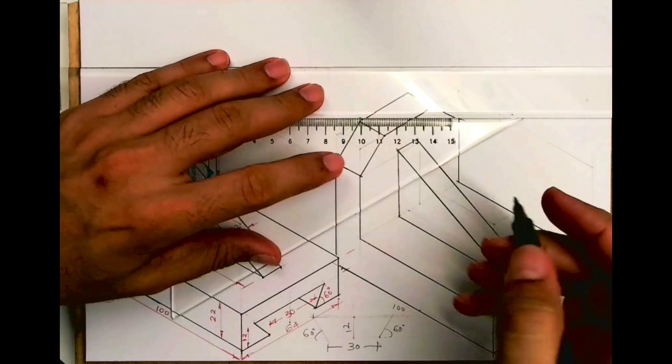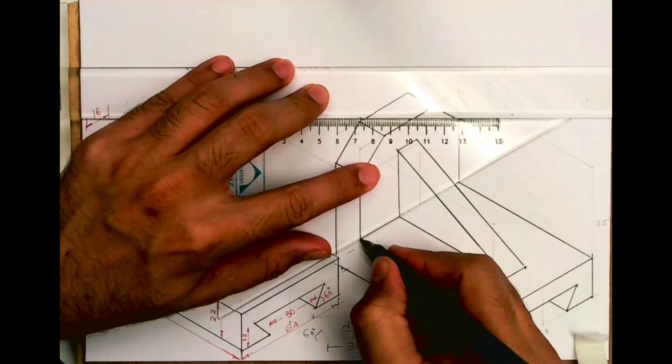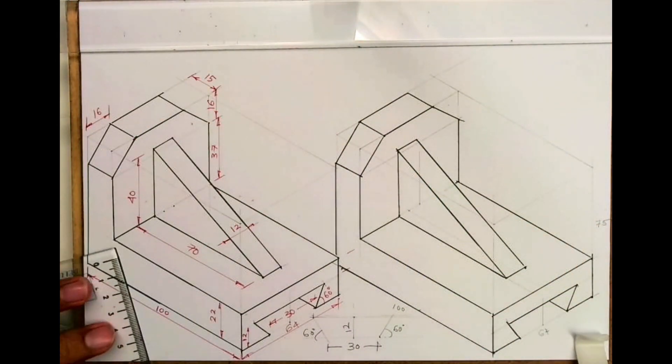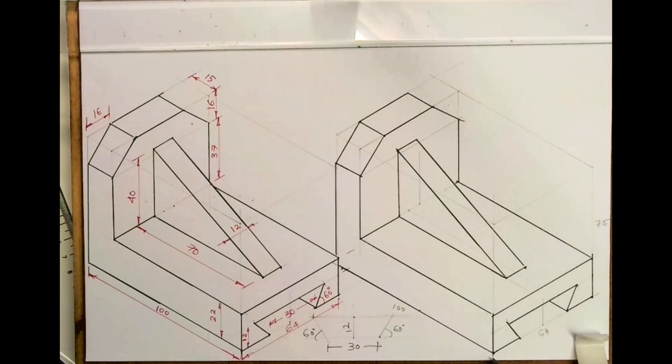So by doing this, you got the required isometric. So I hope you have understood this. Thank you.